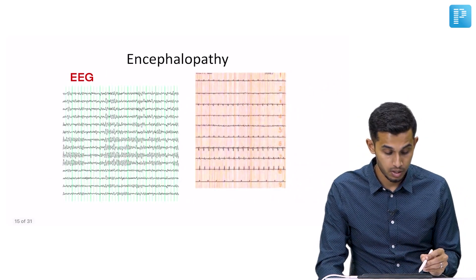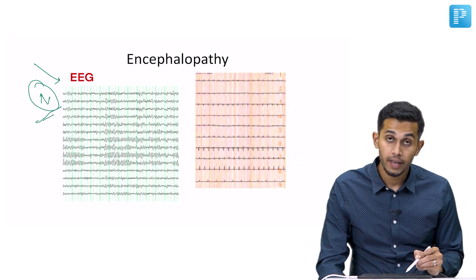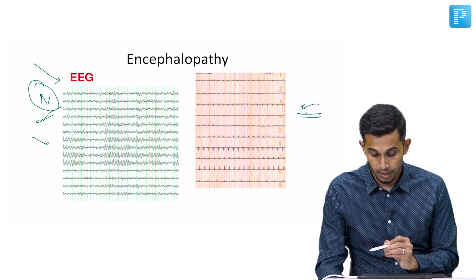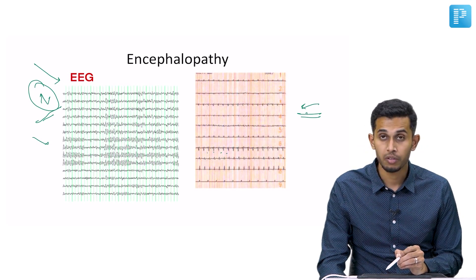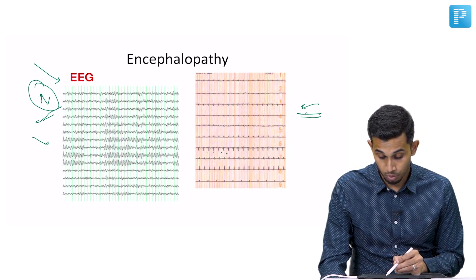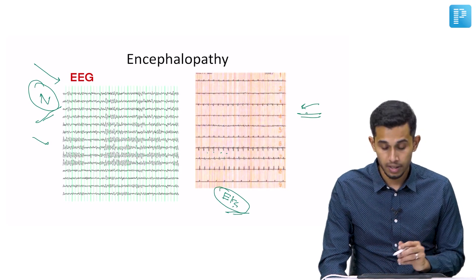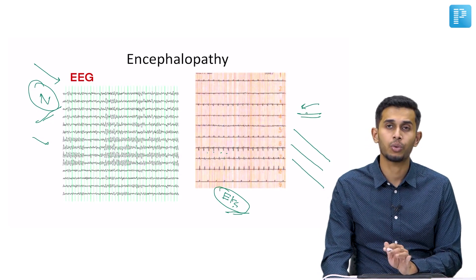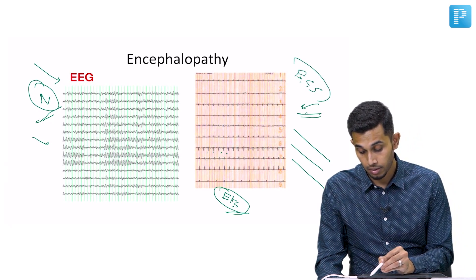The EEG of a normal patient shows good alpha and beta waves. In a brain dead patient, there may appear to be some deflections, but these are rhythmically present and are most likely EKG or ECG artifacts. If you remove the artifacts, we see a plain flat line — this is called electro cerebral silence.